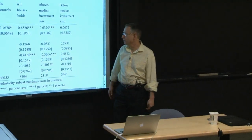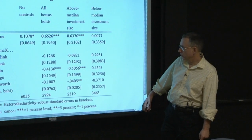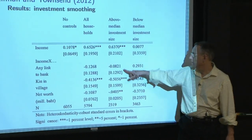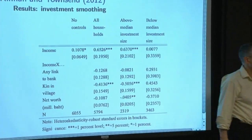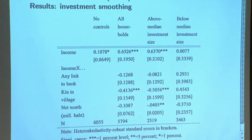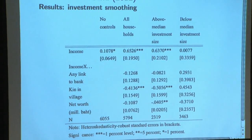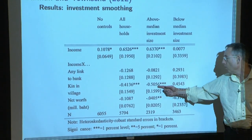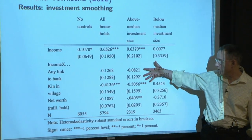With investment, what are the differences? Whatever we're subtracting off doesn't lower the total to zero — there's still residual vulnerability. With investment, smoothing investment against cash flow, you are left with some idiosyncratic risk. Although kin are quite helpful, measured transactions are not.